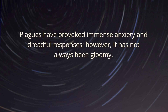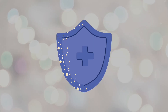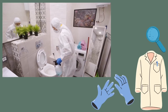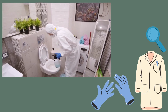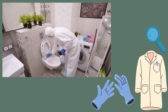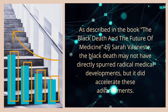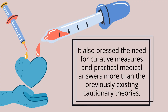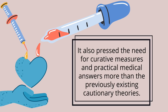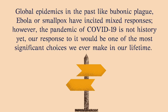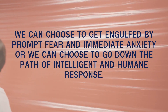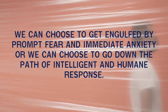Plagues have provoked immense anxiety and dreadful responses; however, it has not always been gloomy. There have been legacies of illnesses where we chose the positive option — typhoid and cholera gave us spacious urban centres, broad avenues, and other sanitary practices. As described in The Black Death and the Future of Medicine by Sara Vanest, the Black Death may not have directly spurred radical medical developments, but it did accelerate these advancements and pressed the need for curative measures. Global epidemics like bubonic plague, Ebola, or smallpox have incited mixed responses. However, the pandemic of COVID-19 is not history yet — our response to it would be one of the most significant choices we ever make. We can choose to be engulfed by fear and anxiety, or we can choose the path of intelligent and humane response.